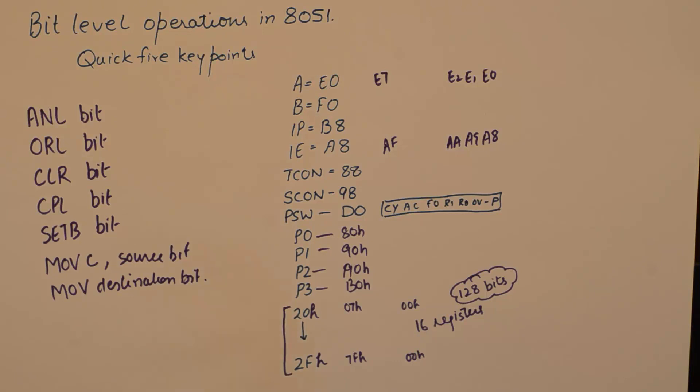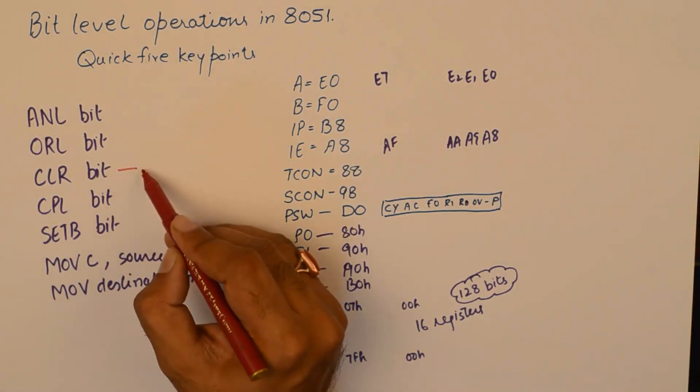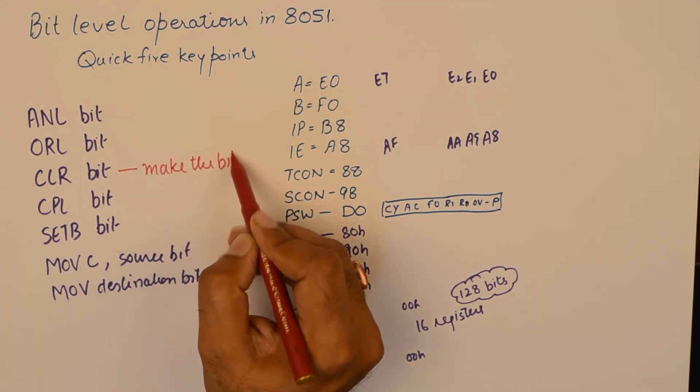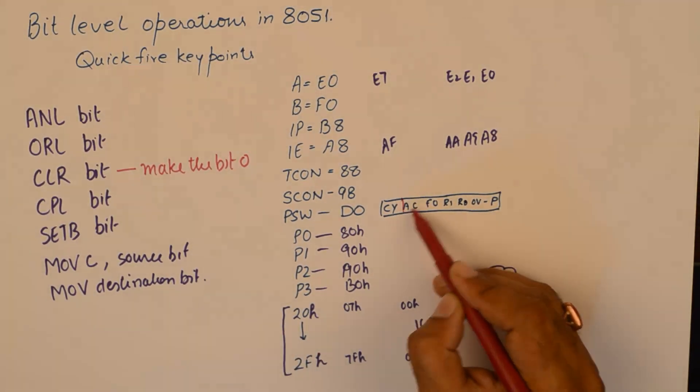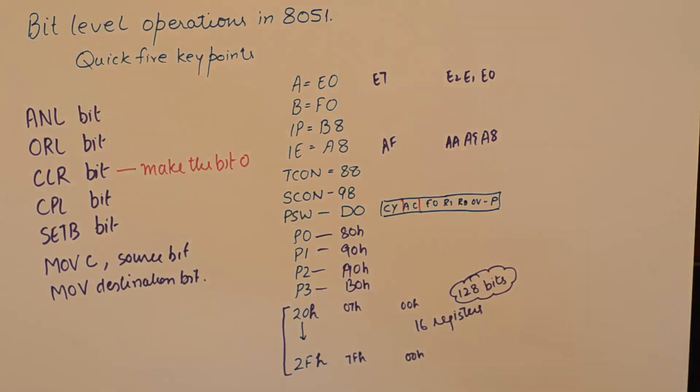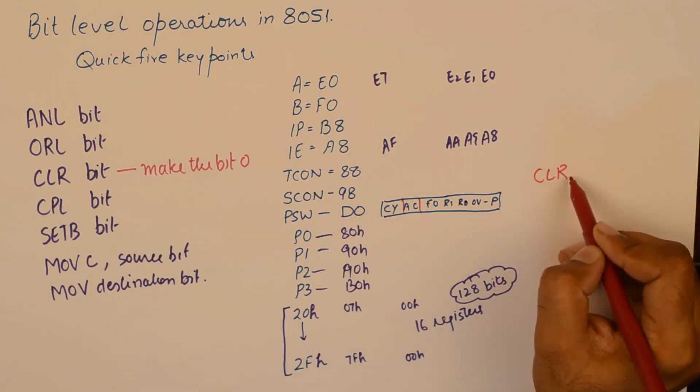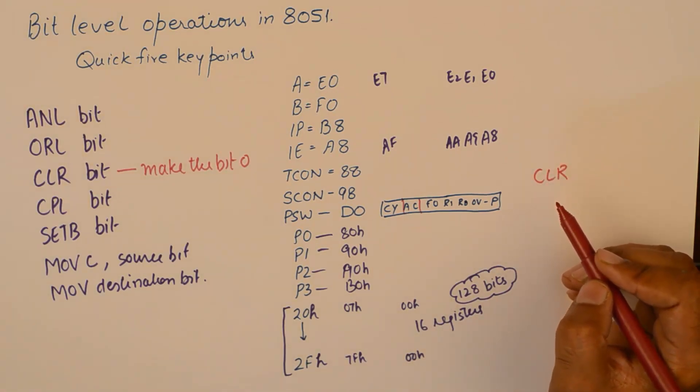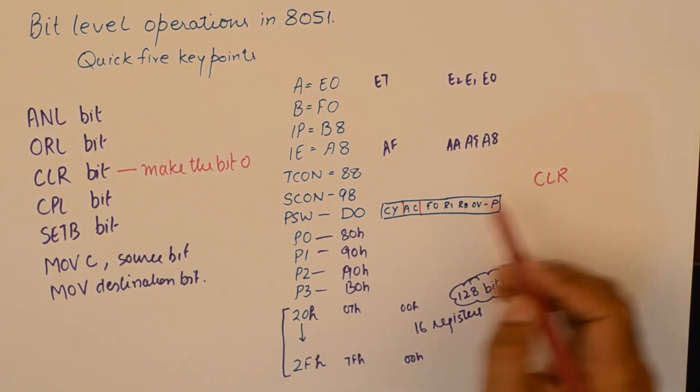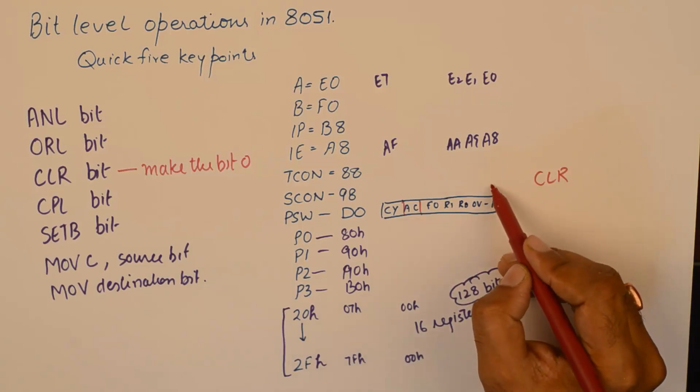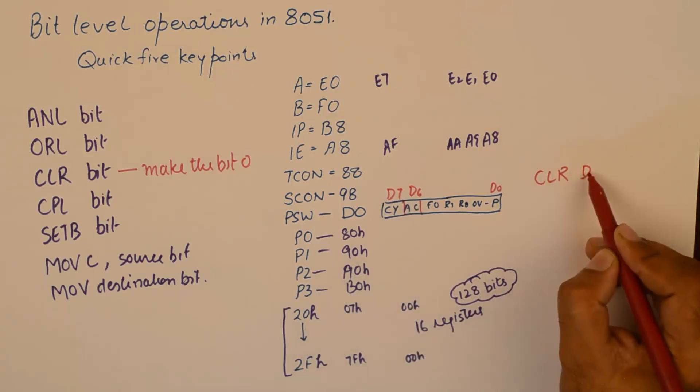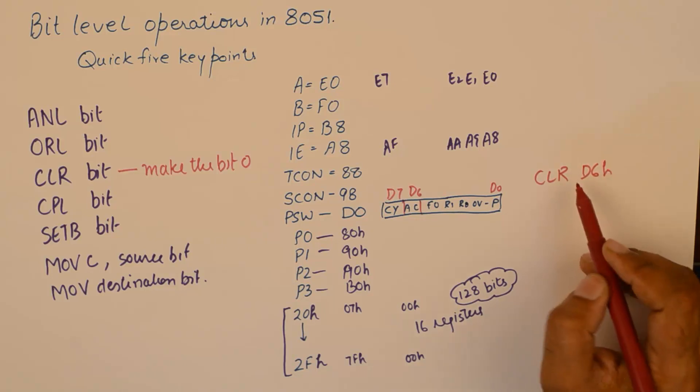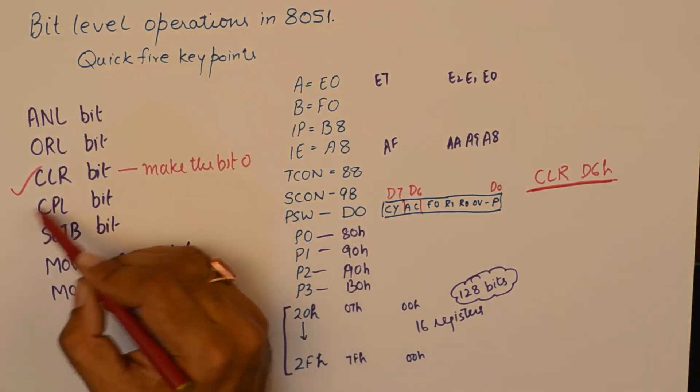I'll start with the easiest one. Clearing a bit would make the bit zero. I'll give you an example. For example, if you want to make the auxiliary carry zero, how do I do that? I would write down CLR D6H, and I'll have to find out the address of this bit, which in this case would be D0, D6, D7. So if I write down CLR D6H, it is automatically going to clear auxiliary carry.